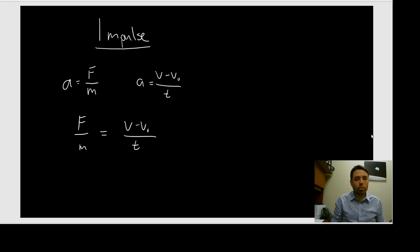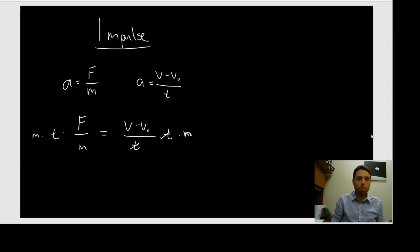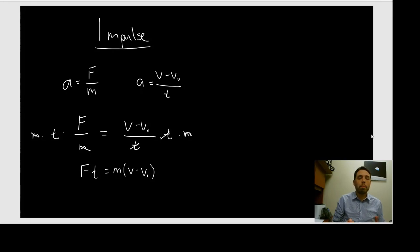What would happen if we set these equations equal to each other? We get F over m equals v minus v-naught over t. Let's rearrange this — multiply both sides by t and by m. These cancel, and we get FT equals the change in velocity, v minus v-naught, times m. So what we're saying is that force times time equals mass times the change in velocity.